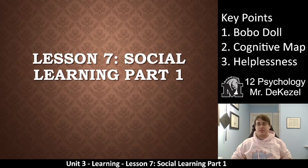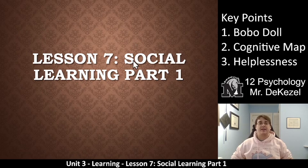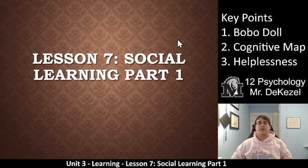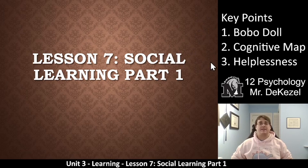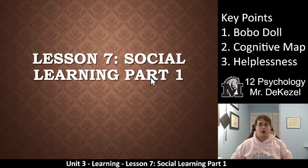Hello, grade 12 psychology class. Welcome back to another lecture. We have lesson seven today: Social Learning Part One. Only three key points. One is Bobo doll, two is the cognitive map, and three is helplessness — should be learned helplessness, it's just too long to fit on there.